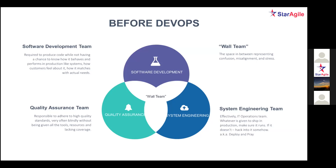Previously, all teams worked in silos. A developer's code would work fine on his own machine but when it went to production there was a complete mismatch and the code wouldn't work. There was no uniformity of platform — that end-to-end uniform platform was missing. The infrastructure baseline was not there. These disadvantages have been resolved since DevOps came into the market.